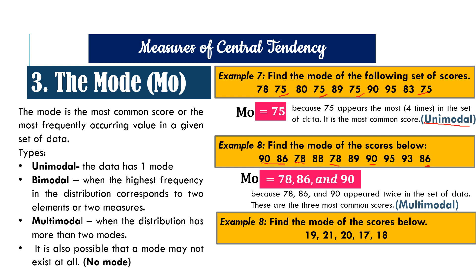For example nine, we have to find the mode of the scores below. We have 19, 21, 20, 17, and 18. As you can see, each of the scores appeared only once, which means that this data has no mode. So those are the examples for mode.